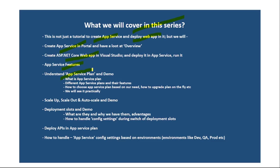You can pause this video and read the points from this presentation. Then we will discuss scale up, scale out, and auto scale features along with demos. Then we will discuss what deployment slots are, why we have them, and how to handle config settings during the switch of deployment slots — again with a practical demo. We will also deploy APIs in our app service plan. Finally, we will discuss how to handle app service config settings based on our environments, for example dev, QA, production, and local.